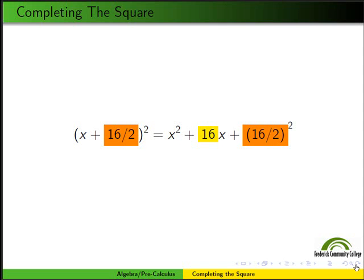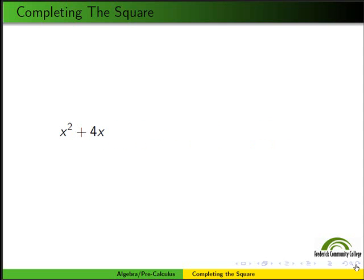So how is this useful? Let's look at an example. Here is something that is not a perfect square: x² + 4x. And for whatever reason, we want to make it a perfect square. So how do we make it a perfect square? We take half of the coefficient of x, square it, and then add it on to the end.